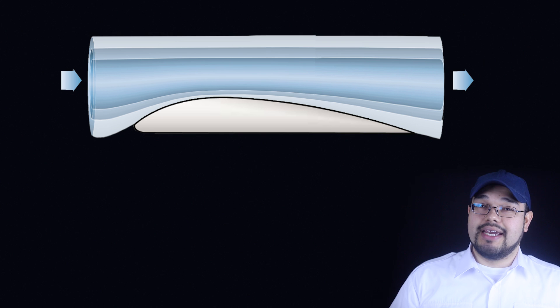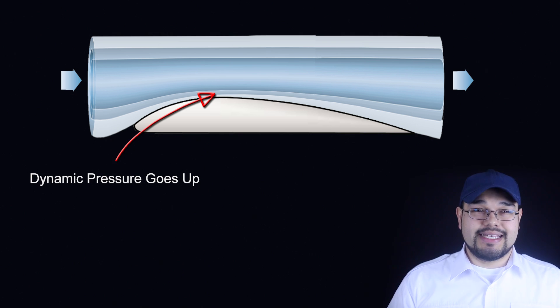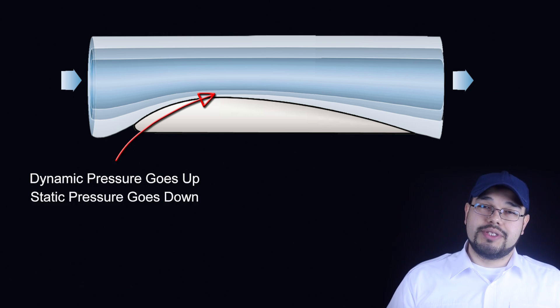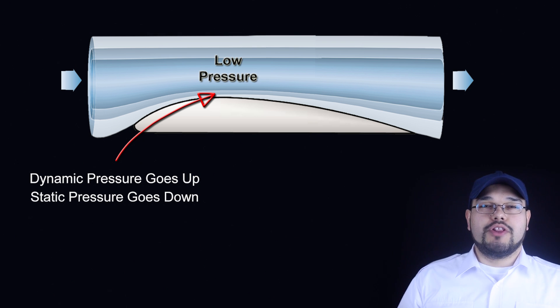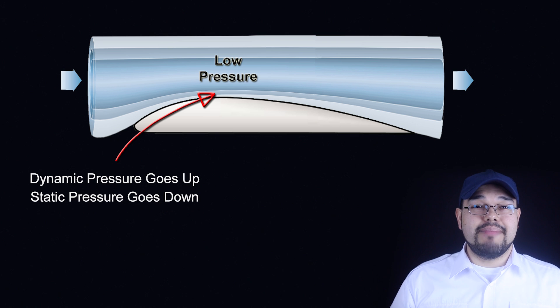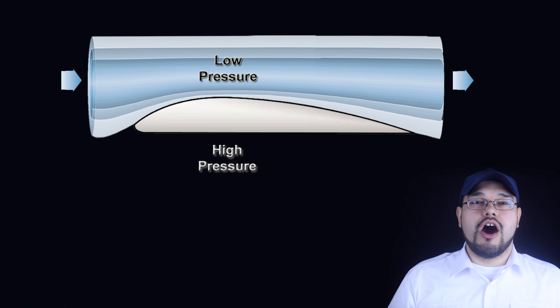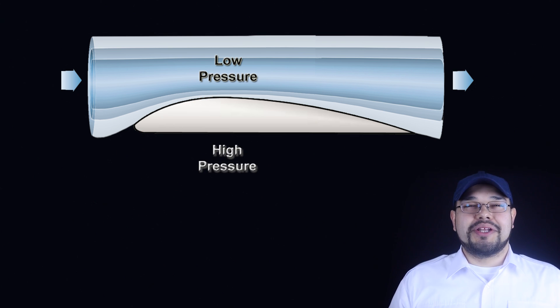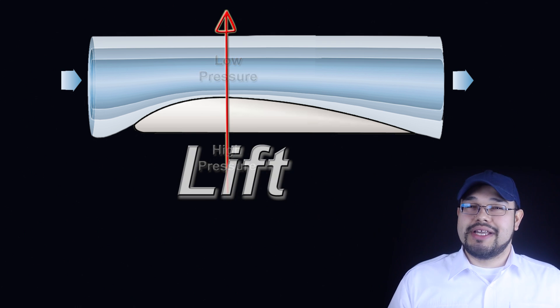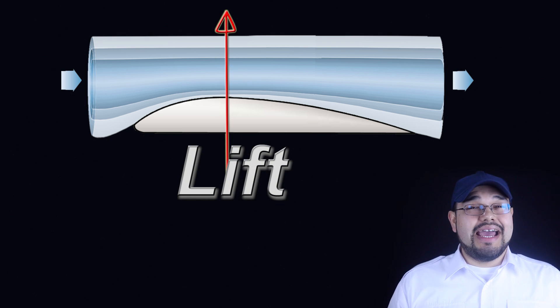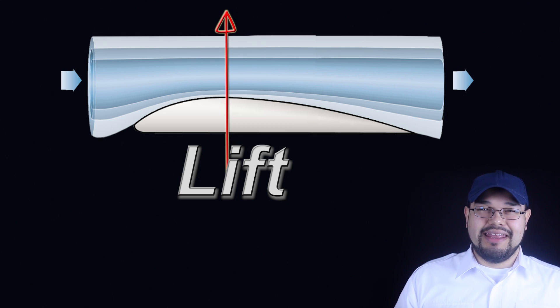So just like the pipe, the air travels faster over the hump, dynamic pressure goes up, something's gotta give. So static pressure goes down, and we have a relative low pressure that has developed on top of the wing. So if we have a relative low pressure on top of the wing, that means there's a relative high pressure on the bottom of the wing. The air wants to go from high pressure to low pressure, creating an upward force known as lift on the wing. Which yes, lift is what holds the airplane in the air.